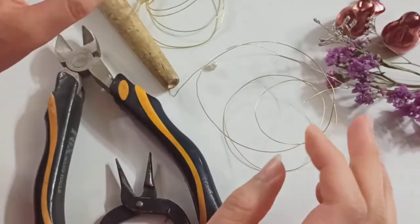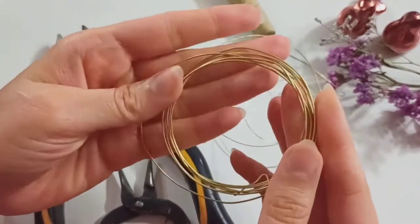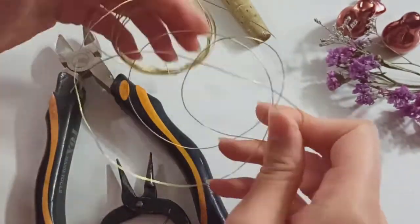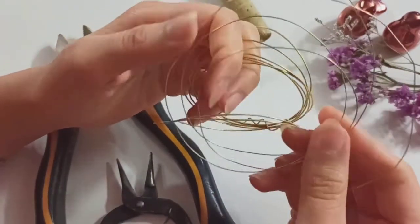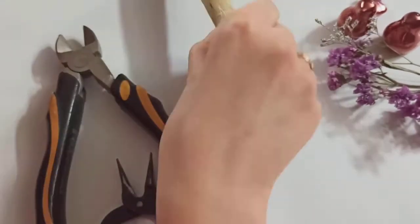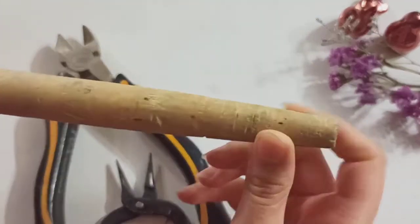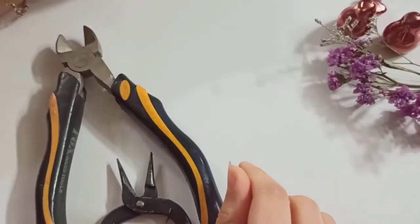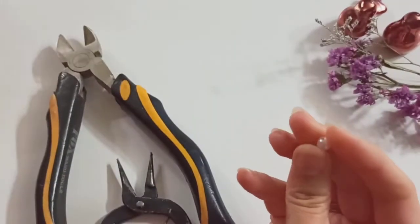All you need is 0.8 wire for the main structure, 0.5 or 0.4 wire for the weaving parts, a mandrel to wrap the structure and the wire all around it, and also a pierre.